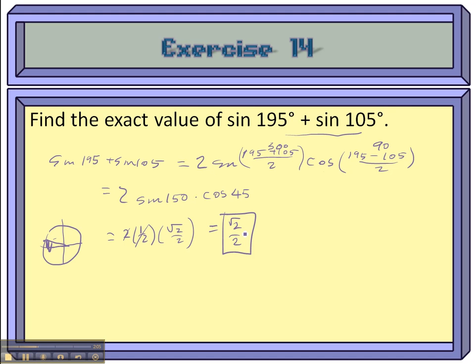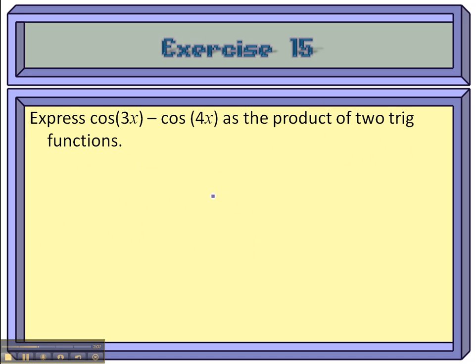Next. Exercise 15. Express cosine 3x minus cosine 4x as the product of two trig functions. It's as if we're going to factor this. Ordinarily, it wouldn't seem like we could.